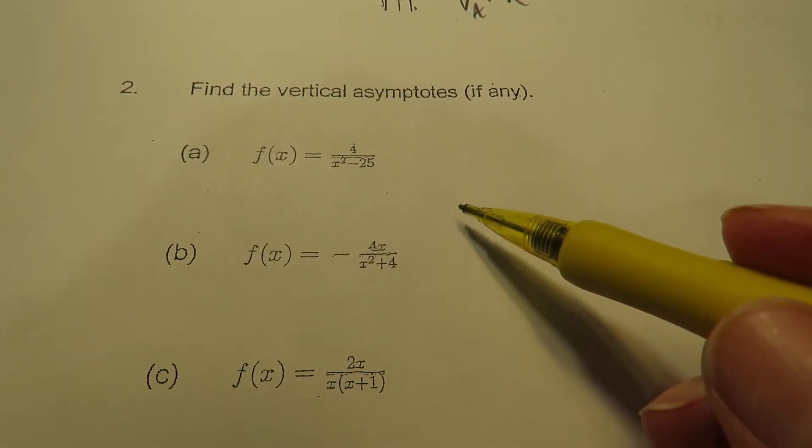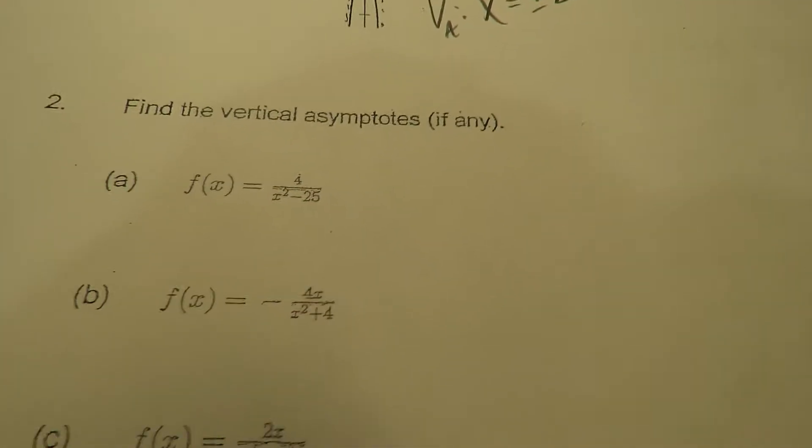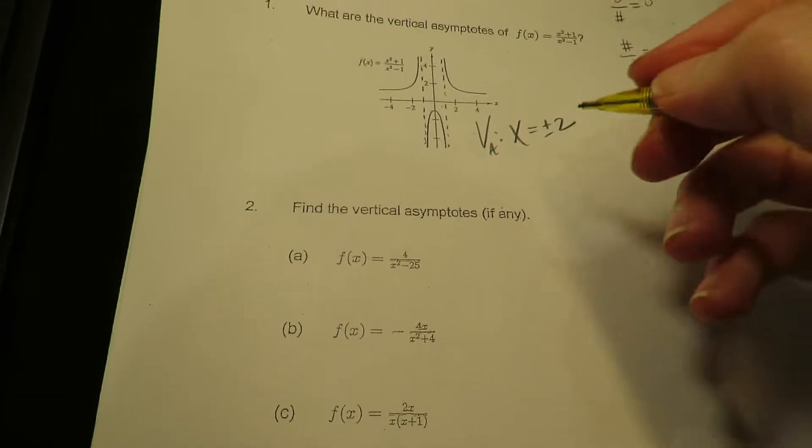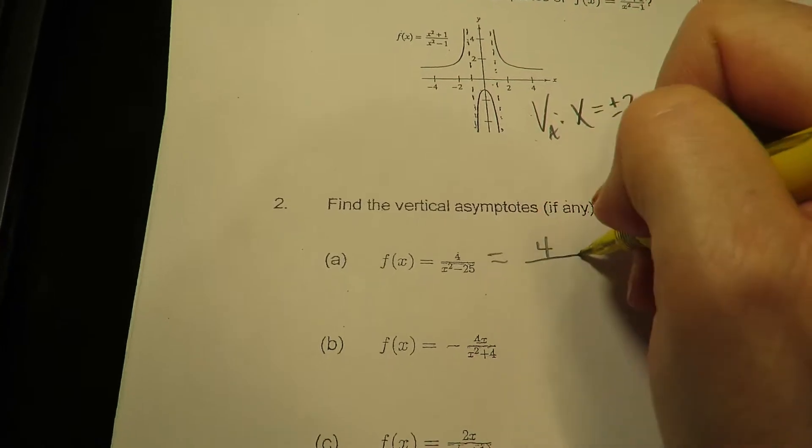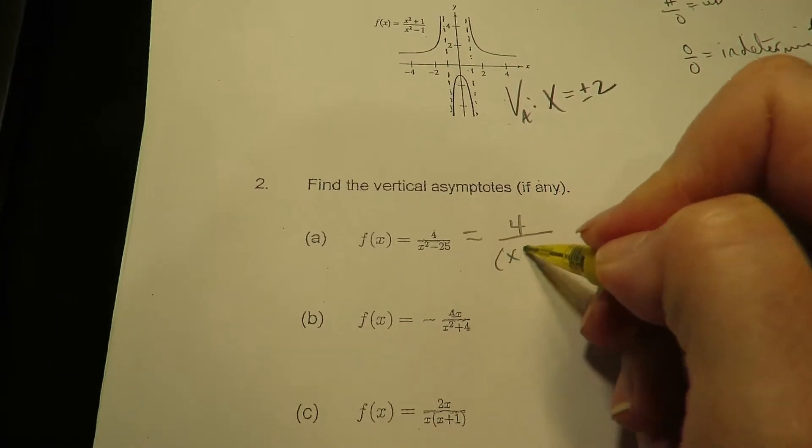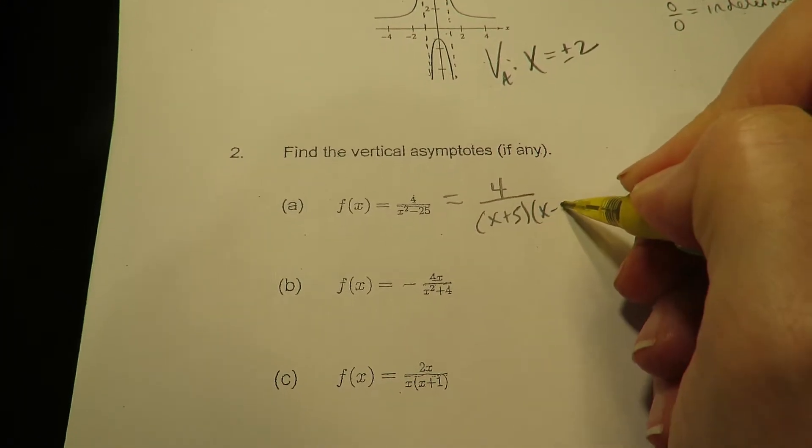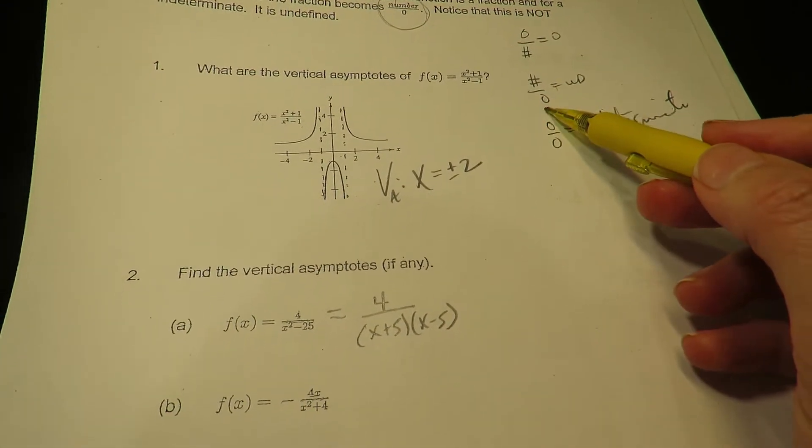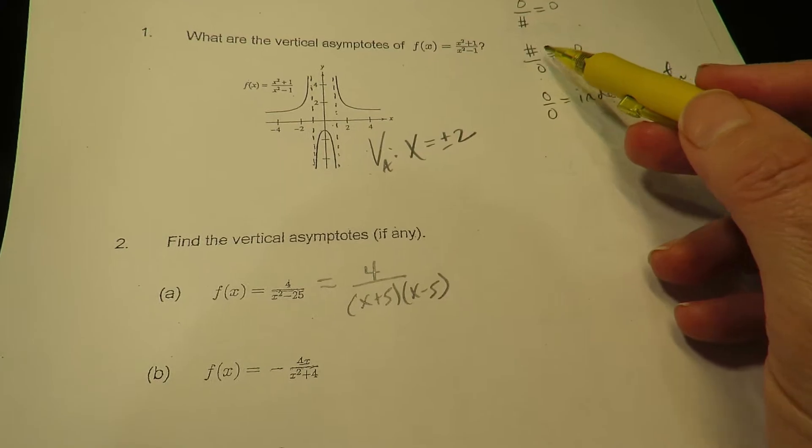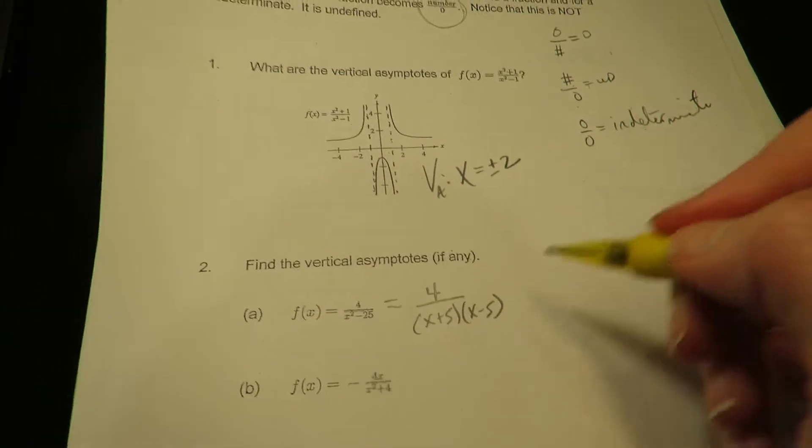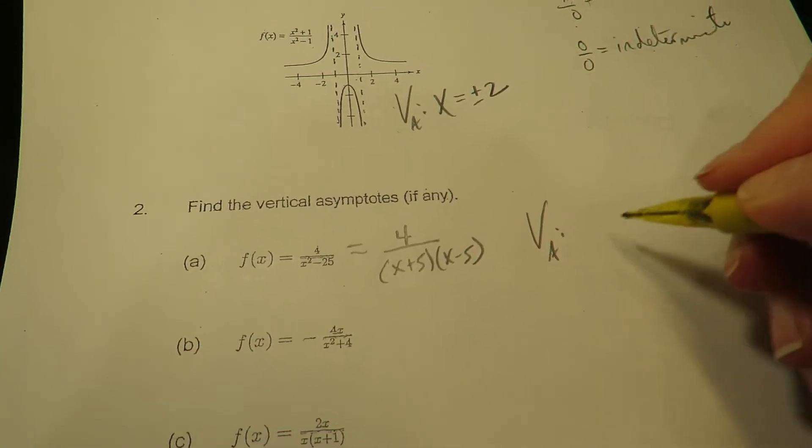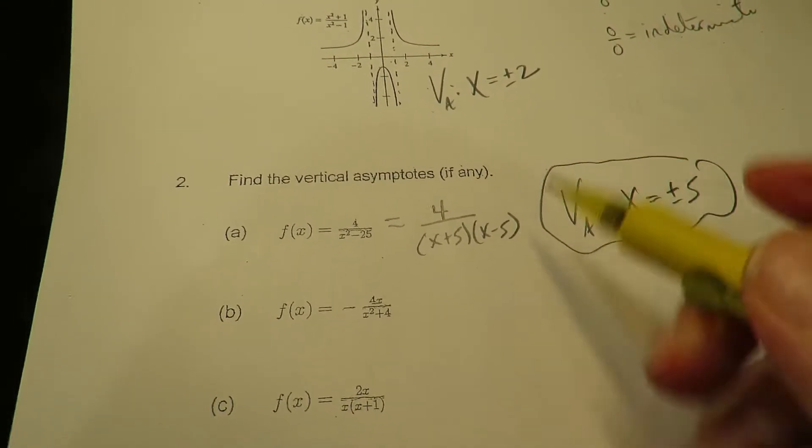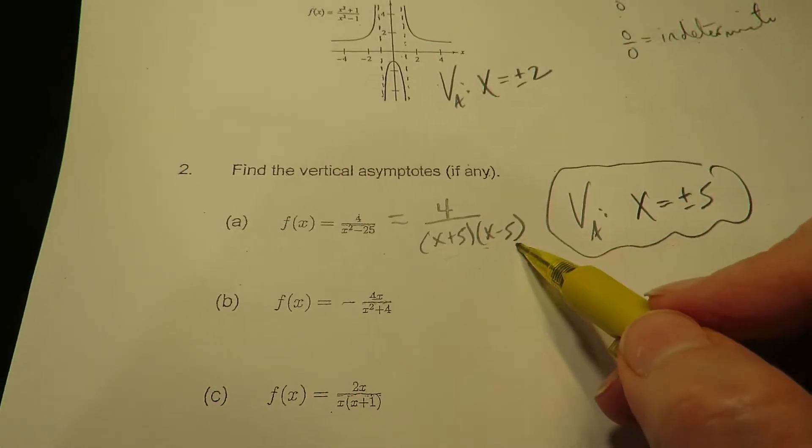Let's look at some analytical examples now. So let's start with the first one. So you'll have to factor this, difference of perfect squares. And again, the VA is going to occur where the denominator equals to 0, but the numerator does not. So as you can see from this one, you're going to get your VAs are going to be at plus or minus 5, because that's where the denominator is equal to 0.